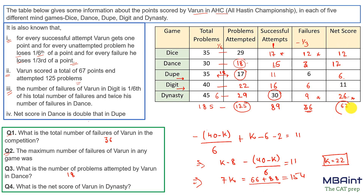Cross-checking: summing net scores — 22, 12 + 12 = 40... 24 + 6 = 30, 30 + 11 = 41, 41 + 26 = 67. Perfect! Maximum number of failures in any game is 12 (dynasty). Net score of Varun in dynasty is 26. You just need to be a little smart in taking variables and solving accordingly. Hope you understood. Thank you.